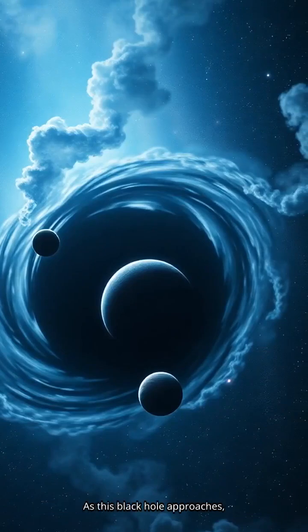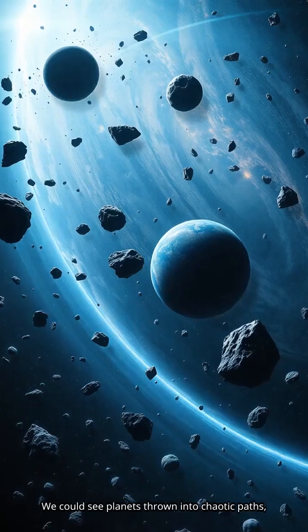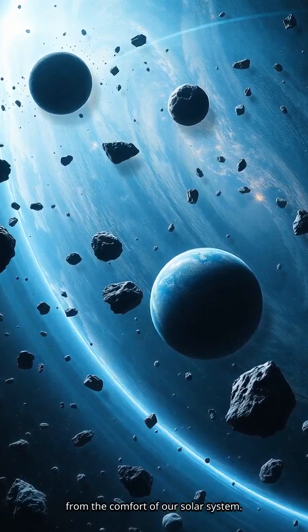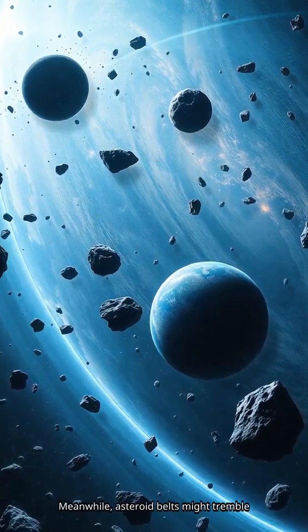As this black hole approaches, its powerful gravitational pull begins to destabilize the orbits of planets and celestial bodies around it. We could see planets thrown into chaotic paths, with some potentially flung far away from the comfort of our solar system.